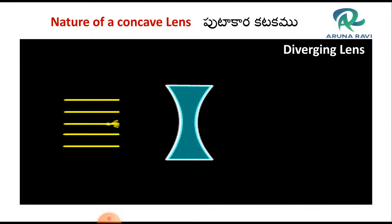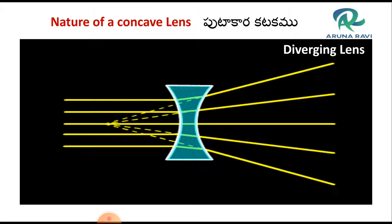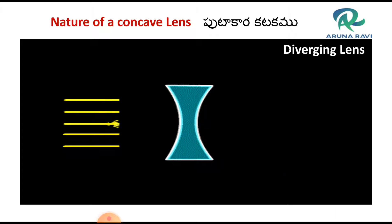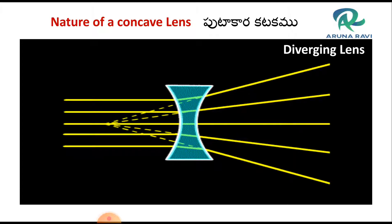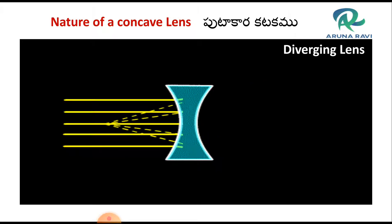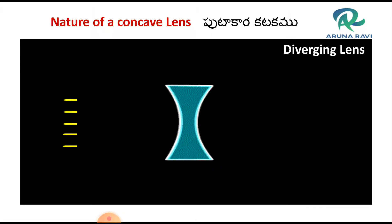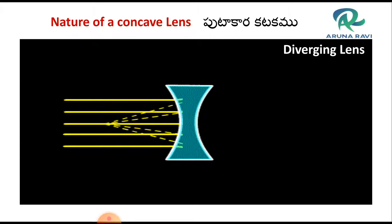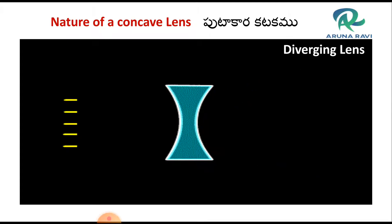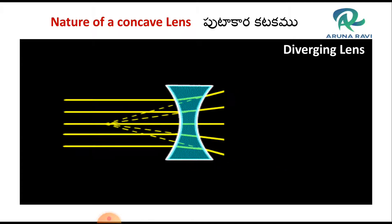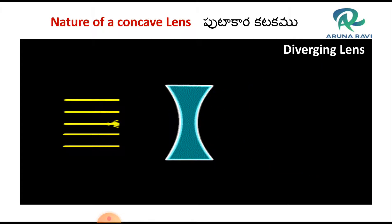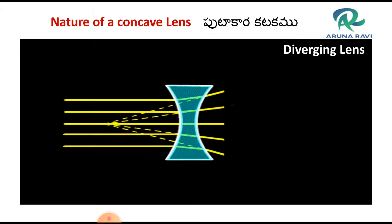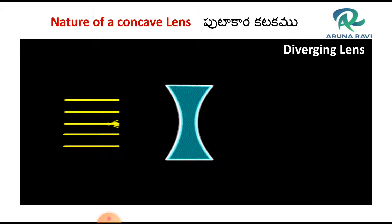We can get only virtual images using a concave lens. A concave lens is a diverging lens, and we shall get virtual images only by using a concave lens.